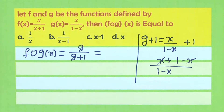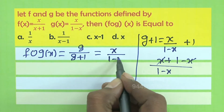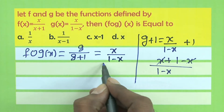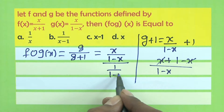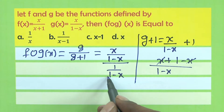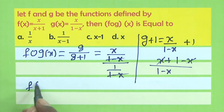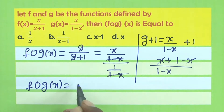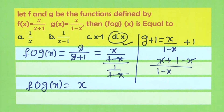So g(x) = x/(1-x) and g+1 = 1/(1-x). The (1-x) terms cancel, so f(g(x)) = x. Therefore option D is correct.